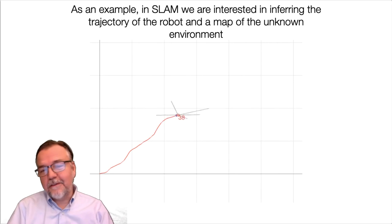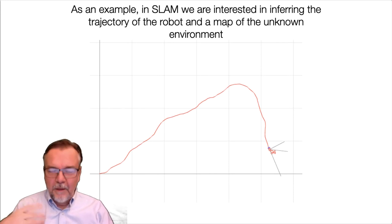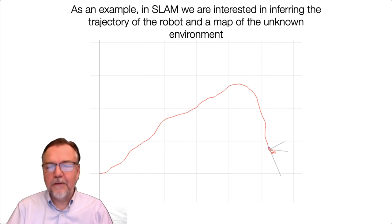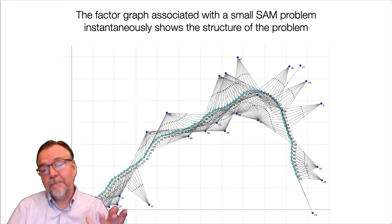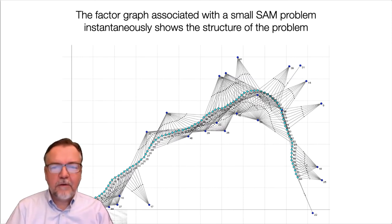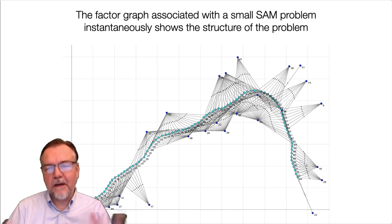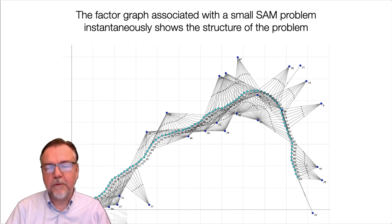Here's a simple example. In simultaneous localization and mapping, or SLAM, we're interested in inferring the trajectory of the robot and a map of the unknown environment. If you think about all measurements at the same time and view the entire graph of the problem, you get insight into its nature. You can see a trajectory connected to a number of landmarks, and it is not a fully connected graph — it is sparse — and the sparsity tells you something fundamental about the nature of your problem.